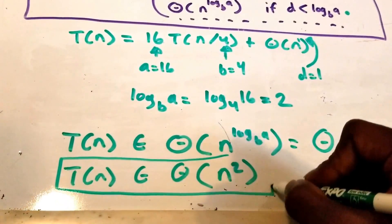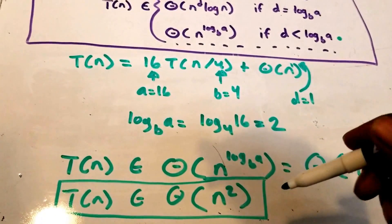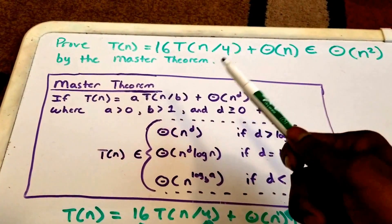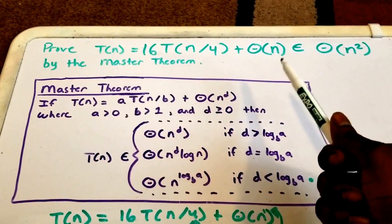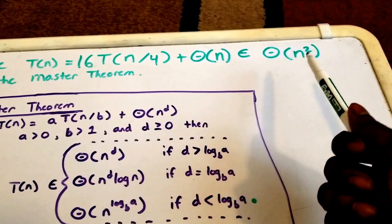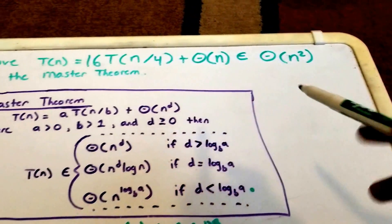So we just now have proven that our function T of n which is equal to 16 times T of n divided by 4 plus theta of n belongs to theta of n squared. All right,